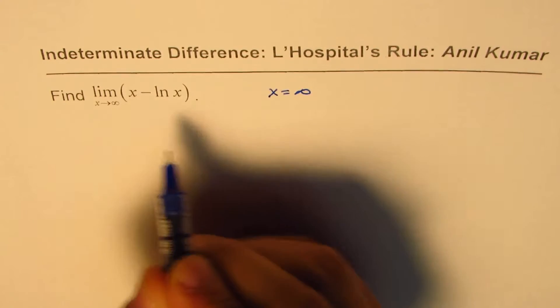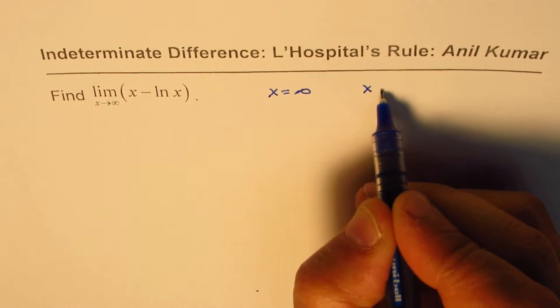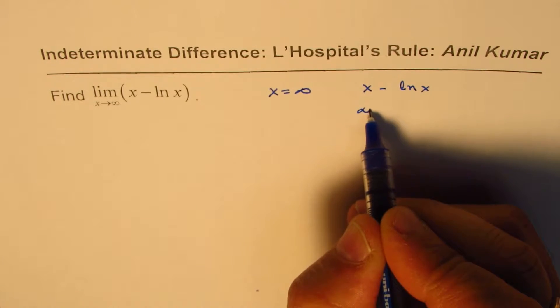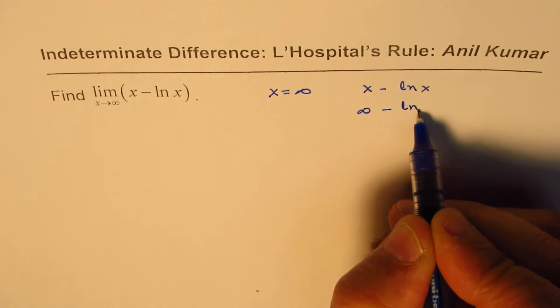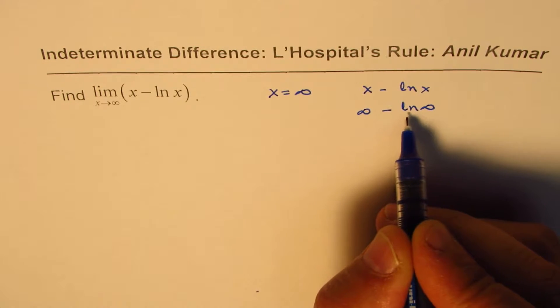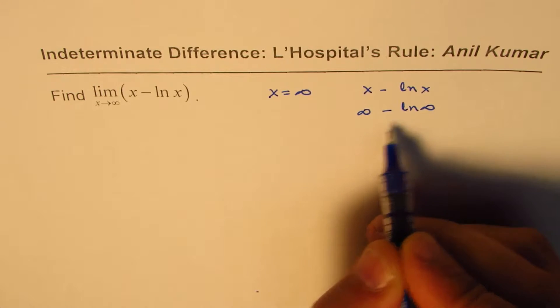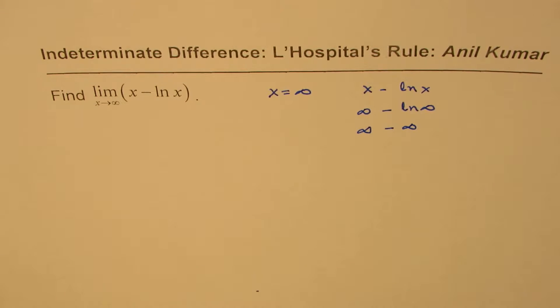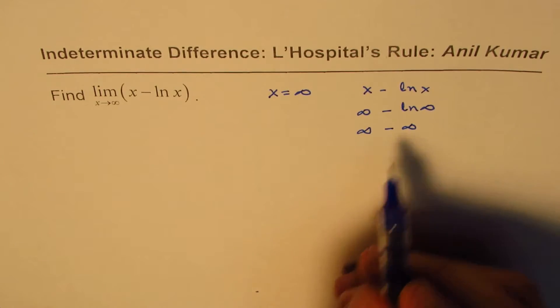If I substitute x equals infinity in x minus ln x, what do I get? I get infinity minus ln infinity. As x approaches infinity, ln infinity also approaches infinity, so we have infinity minus infinity.